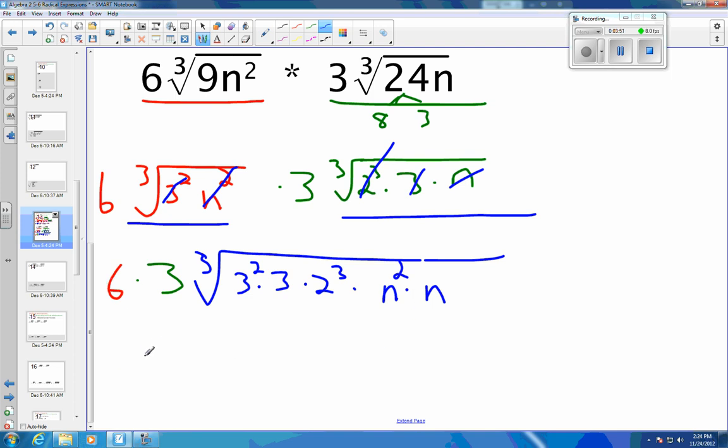So 6 times 3 is 18. And I'm going to leave this my radical just for sake of showing you one more step. So 3 squared times 3, that's actually a 3 cubed. My 2 cubed is cubed already. And N squared times N is actually N cubed. So this one works out fairly nicely. I'm going to have my 18 on the outside. Now I can bring out a 3. I can bring out a 2.